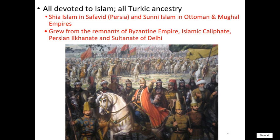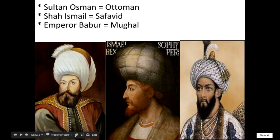These empires are going to be forged out of the former empires of the post-classical era — the Byzantines, the Muslims, the Caliphate, the Mongols, and the Sultanate of Delhi. Each one is going to have a founder, and all of these empires are going to be founded by people of Turkish ancestry — people whose ancestors were the semi-nomadic Turks from Central Asia.